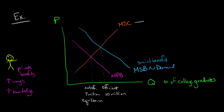the marginal social benefit is going to include the private benefit plus what are called external benefits. Those are benefits to people other than the person going to college.